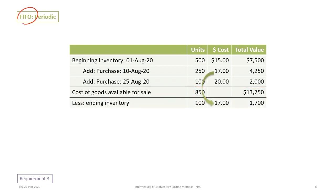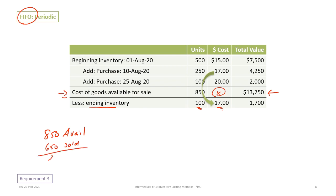Here is where FIFO things change a little bit. Up to this point, the cost of goods available for sale was the same as the weighted average. But now instead of calculating an average cost rate, we determine how many units are in ending inventory based on the cost flow. We had 850 units available for sale, but 650 units were sold, giving us 200 units in ending inventory.